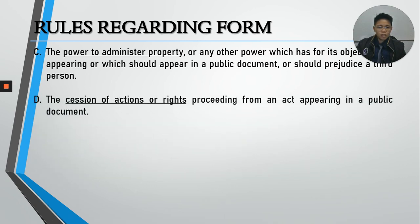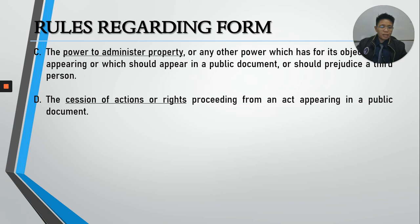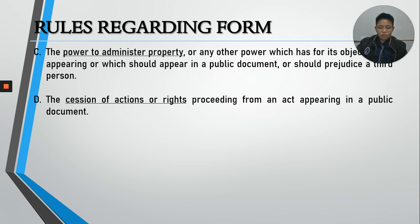Fourth: cession of actions or rights proceeding from an act appearing in a public instrument. For example, a mortgage must appear in a public instrument so that the mortgagee can register it on the debtor's title. If the creditor assigns his right to the mortgage to another party, that assignment of rights must also be in a public instrument. These are the rules regarding forms.